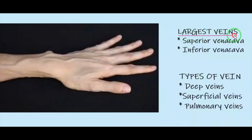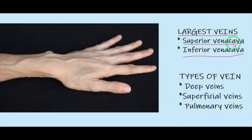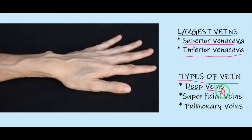The two largest veins present in our body are the superior vena cava and inferior vena cava, located in the heart region. There are three types of veins: deep veins, superficial veins and pulmonary veins.